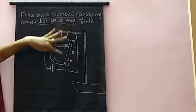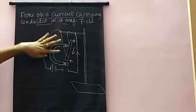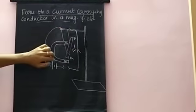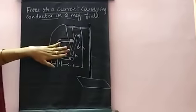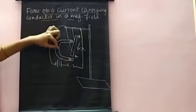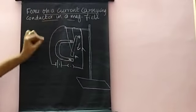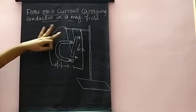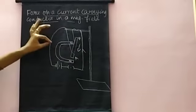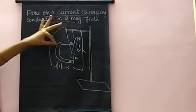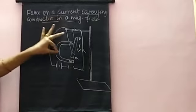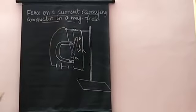Due to the current carrying conductor, it produces a magnetic field. Due to this field, the magnetic force is experienced by the magnet, and the rod gets displaced toward the magnet.